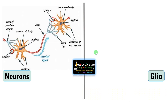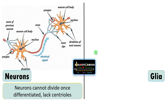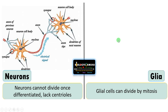The next difference is regarding the capacity of division. Neurons cannot divide once differentiated — mature neurons lack centrioles. As you can see, the neuron's cell body connects to the axon that ends in the axon terminal, and this is continuously connected with continuous nerve impulse transmission, so there is no space for division. Once differentiated, neurons cannot divide. But glial cells can divide by mitosis even after differentiation.